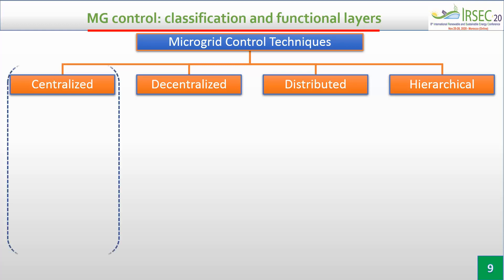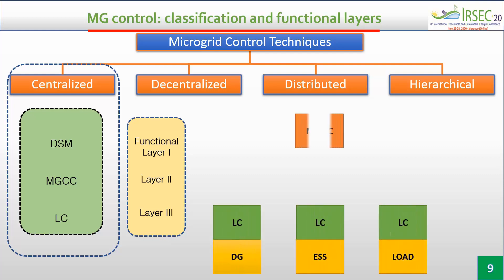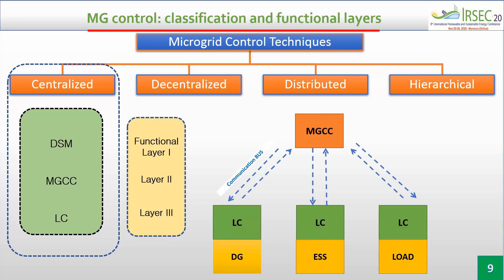The centralized control strategy can be divided into a three-layer structure: local control, microgrid central control, and DMS. The microgrid central control role is to define the reference values to be followed by the local controllers, based on information collected from the system. This controller is usually implemented for small microgrids, but this approach is considered unreliable due to the complexity of the microgrid and the need for a high-bandwidth communication system for rapid information sharing.